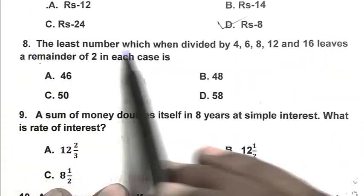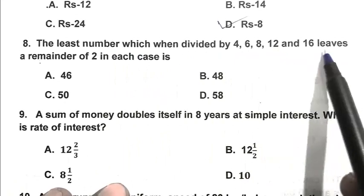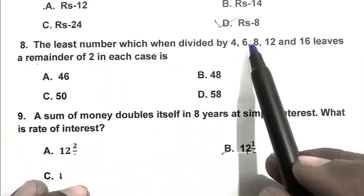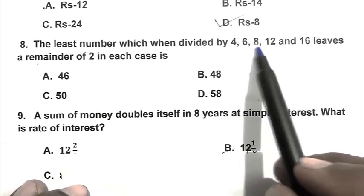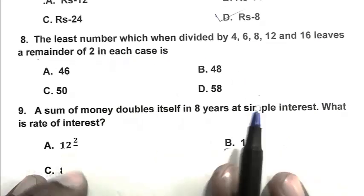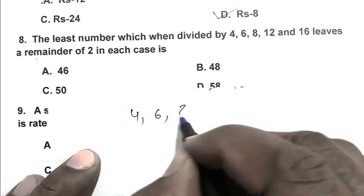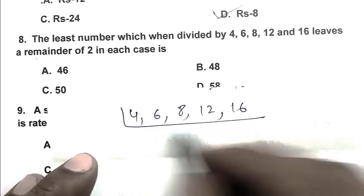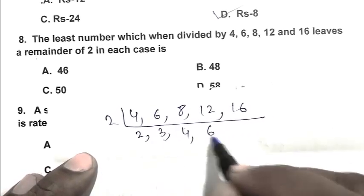Question number 8. The least number which, when divided by 4, 6, 8, 12 and 16, leaves a remainder of 2 in each case is. So first we calculate the LCM of these numbers. We have 4, 6, 8, 12 and 16. 2 gives us 2, 3, 4, 6, 8. Again 2 gives us 1, 3, 2, 3, 4.